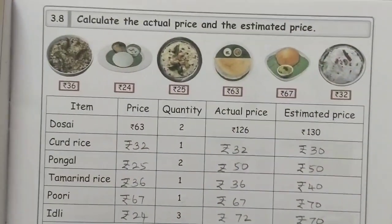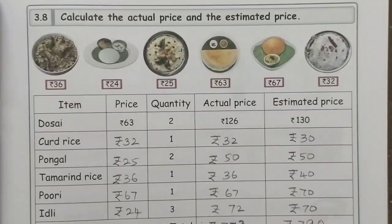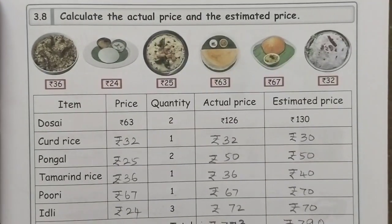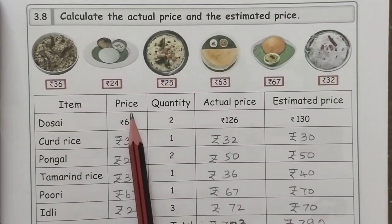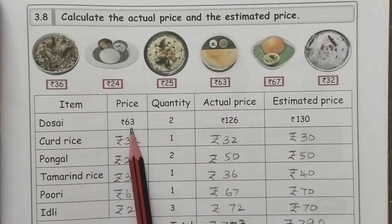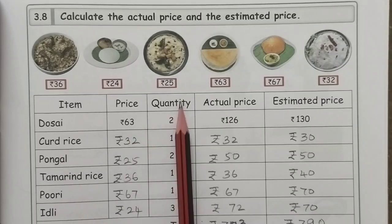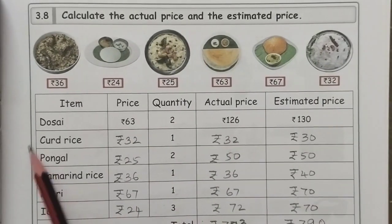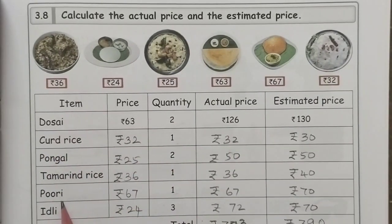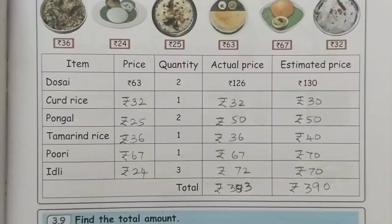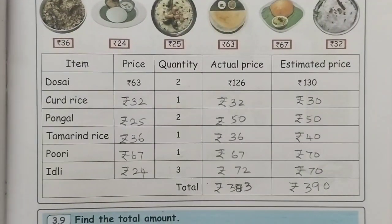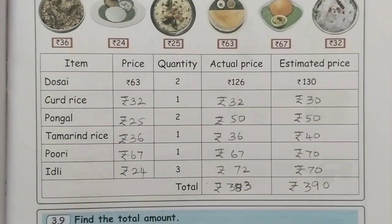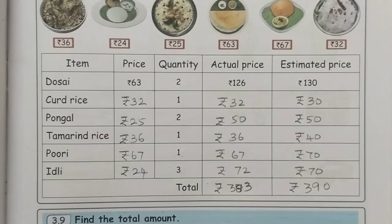The next one: calculate the actual price and estimated price. The price is 63, two quantity is 126 for the estimated price. That is for bird rice, pongal, tamarind rice, poori — if you like it, all of them are the estimated price. Calculate the price and you can add the price.